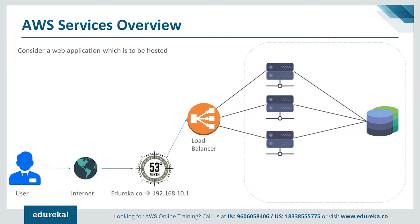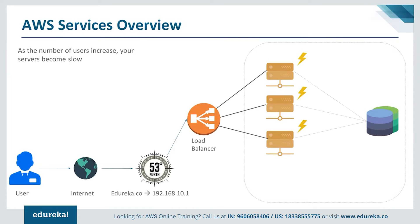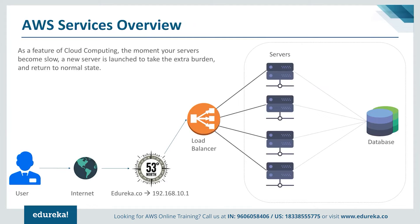This server is connected to a relational database, which has all the information required for your website. Both the database and the servers are inside a network so they can communicate with each other. These are the basic entities in a cloud computing world. Now taking the same problem as before — suddenly a whole lot of users come in and your servers become overburdened. With cloud computing, you don't have to take care of anything. It automatically senses that the servers are getting overburdened, adds a server automatically, and your situation becomes normal.